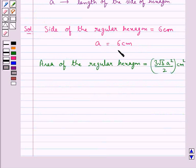Now we put the value for a as 6. So this is equal to 3 root 3 into 6 square upon 2 cm square.